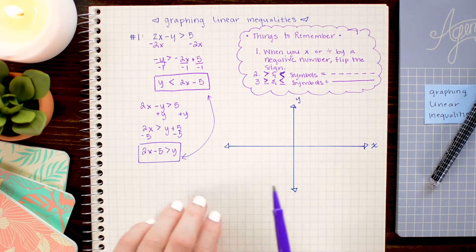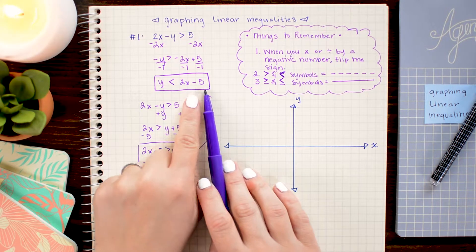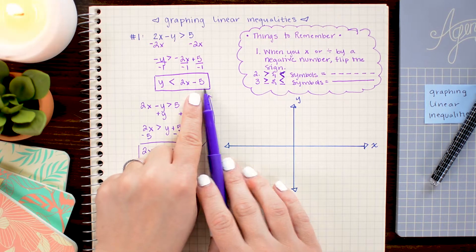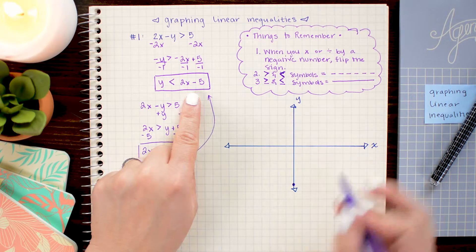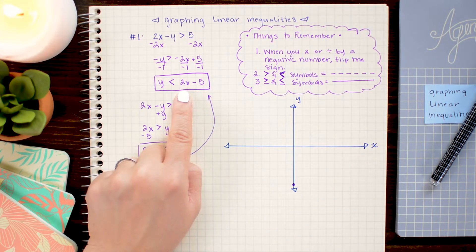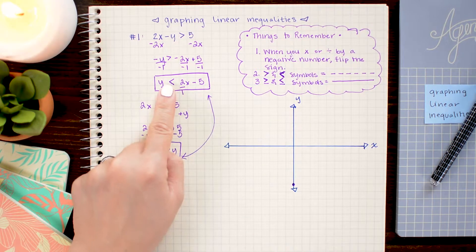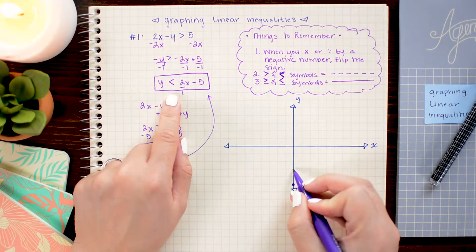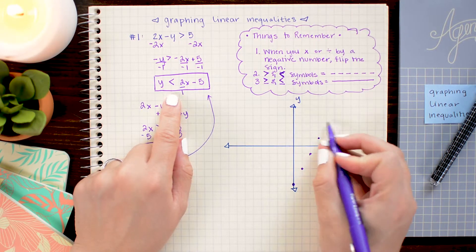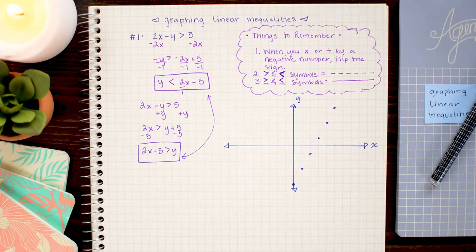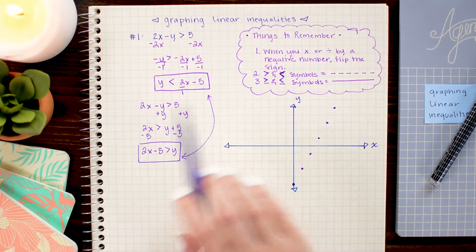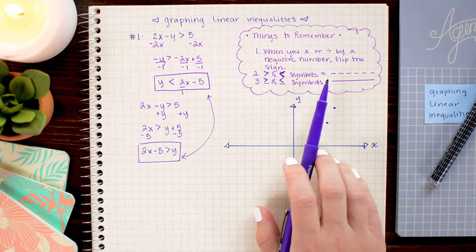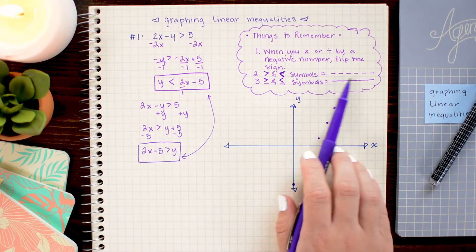So to graph this equation, we are going to start with a y-intercept of negative 5. And then I'm going to plot a slope of 2 over 1. So rise 2 and run 1. And here's the tricky part. Now, because this is a less than symbol and not a less than or equal to symbol, we are going to connect the dots with a dashed line.